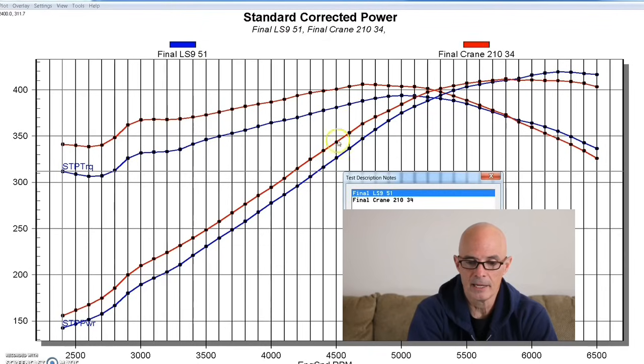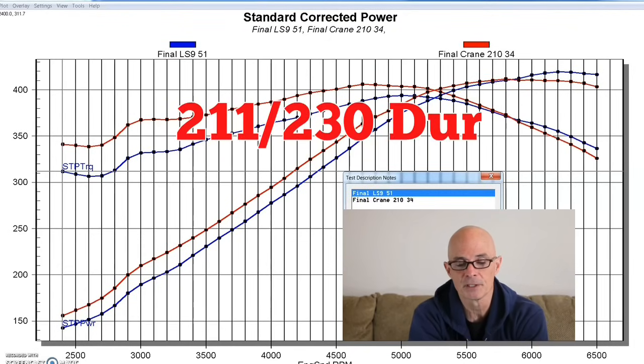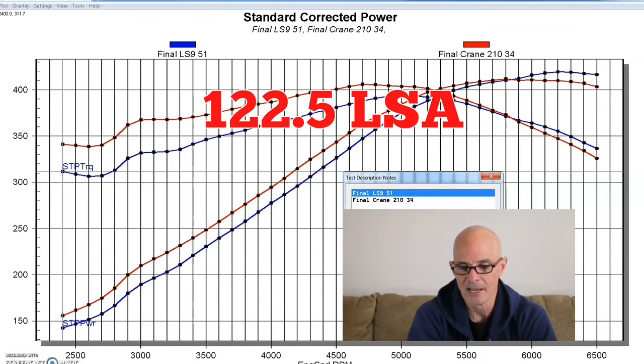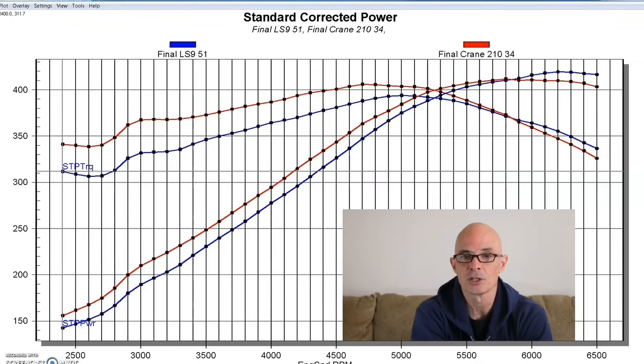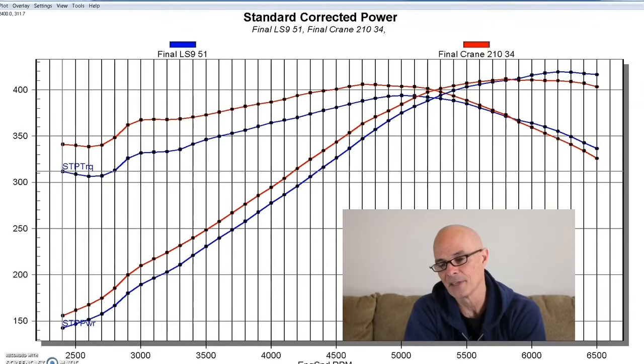And the LS9 cam, for reference, is a 562 lift, 211, but 230 degrees of exhaust duration, and 122.5 LSA. It was designed, obviously, for the positive displacement supercharged applications, and that's why they do that. They make the LSA fairly wide.